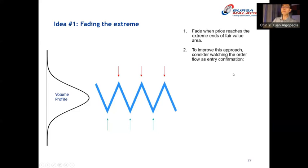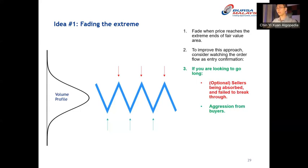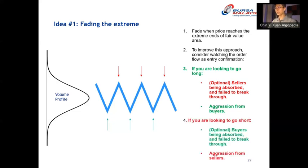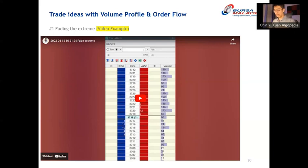To improve this approach, consider using order flow as entry confirmation. If looking to go long at the bottom extreme, you want to see sellers trying to push down but buyers absorbing them like a sponge — sellers failing to break through. More importantly, you want to see order flow going in your favor: buyers aggressively clicking the buy button. If going short, it's the opposite — you want to see sellers being very aggressive while buyers fail to prevent them.